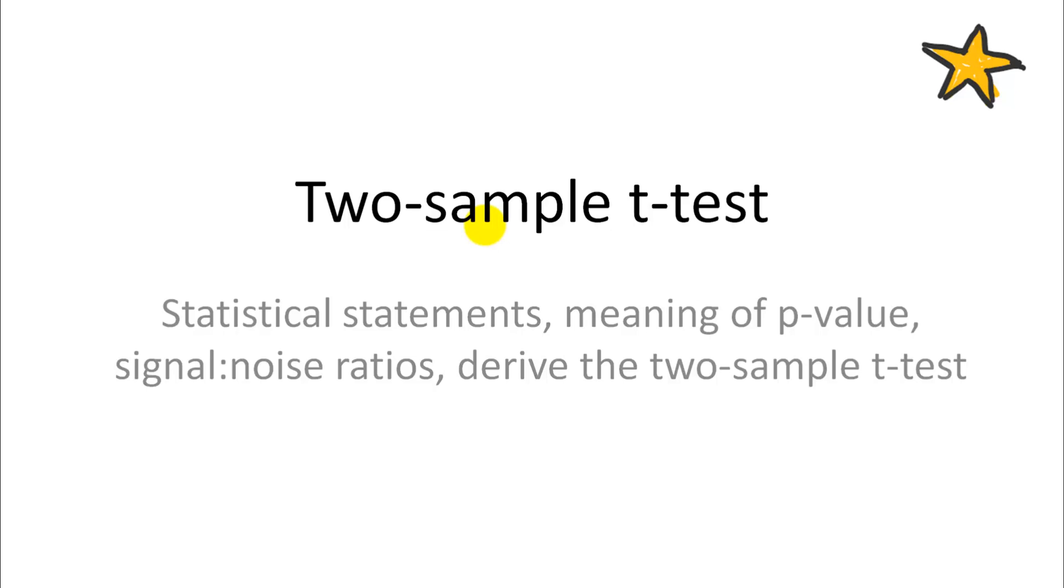And in order to get there, I want to be a bit more explicit about the meaning of the p-value. We'll talk about signal-to-noise ratios, how that plays a role in statistical testing. And then I want to see if with all that knowledge, whether you can actually figure out the two-sample t-test by yourself.